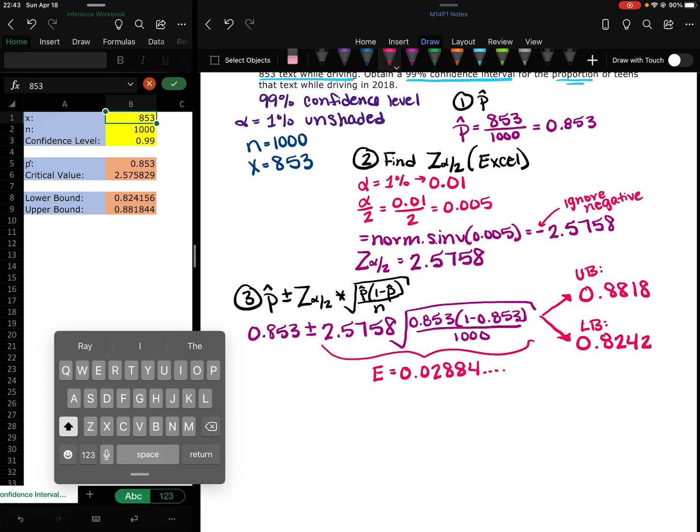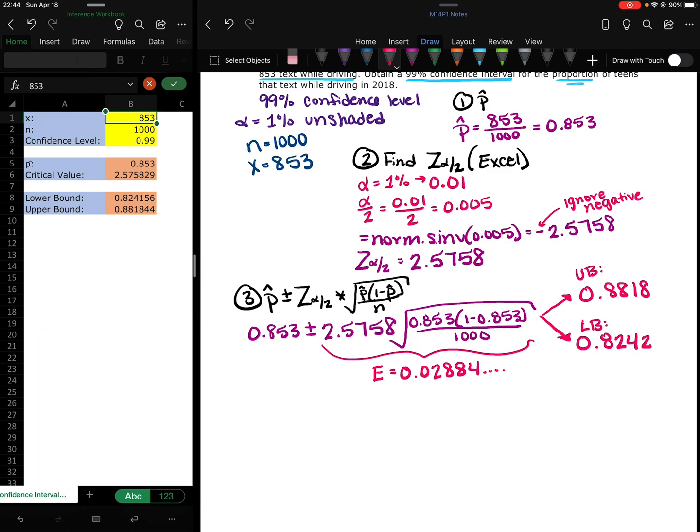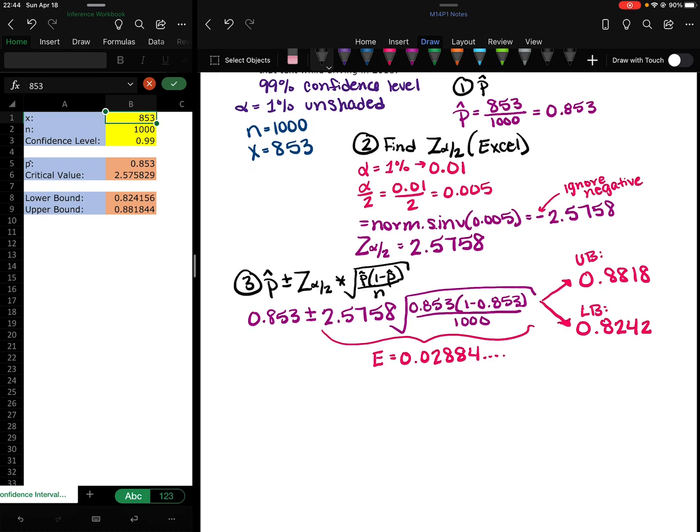And 0.8242, 0.8818. So the last step, whether you do it by hand or using Excel, is to interpret the interval.